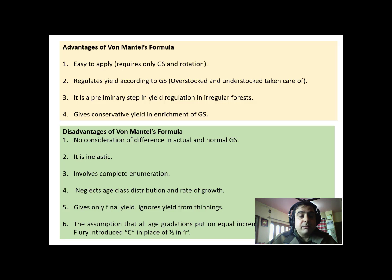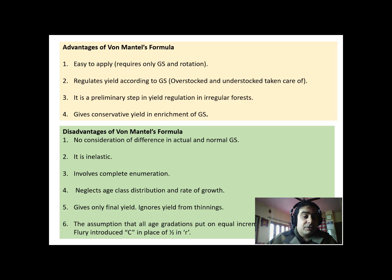Third, it involves complete enumeration — since yield (i×r) is estimated based on growing stock, the growing stock must be enumerated by counting each and every tree and each and every age class. Fourth, it neglects age class distribution and rate of growth, because different age classes put on different increments and have different rates of growth, yet the formula presumes each age class puts on the same increment. Fifth, it gives only the final yield — it does not account for anything collected from thinnings.